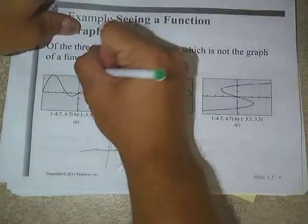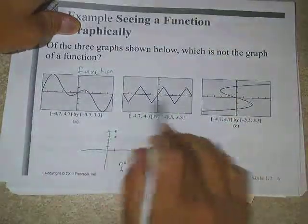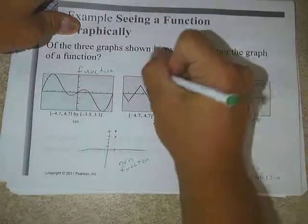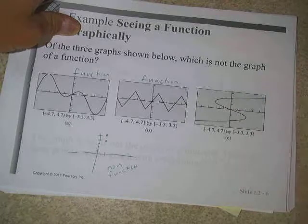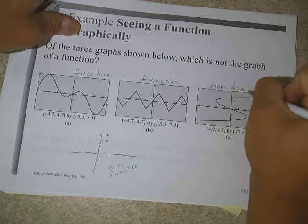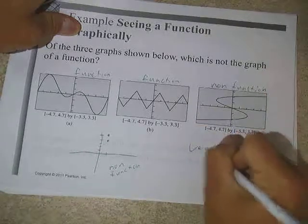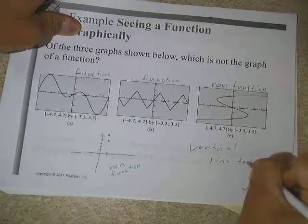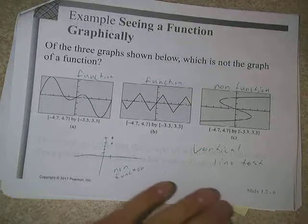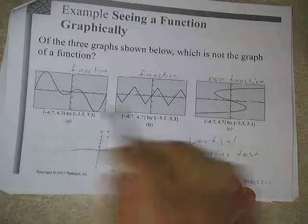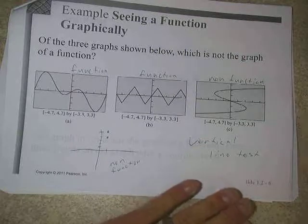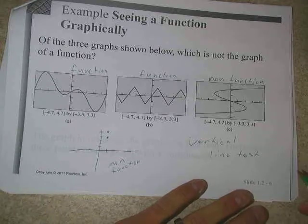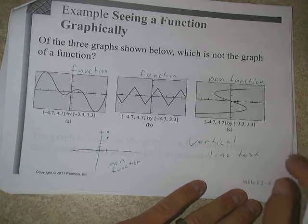Looking at this graph: are there anywhere in this graph where there are points that are vertical to each other? No — so we'd say yes, that's a function. The second graph also has no vertical points — yes, that's a function. In this third graph, if I were to draw a vertical line, would there be points that are vertical to each other? Yes — so this would be a non-function. What we just did is what we call the vertical line test. If a graph passes the vertical line test, it's a function; if it doesn't pass, it's not a function.